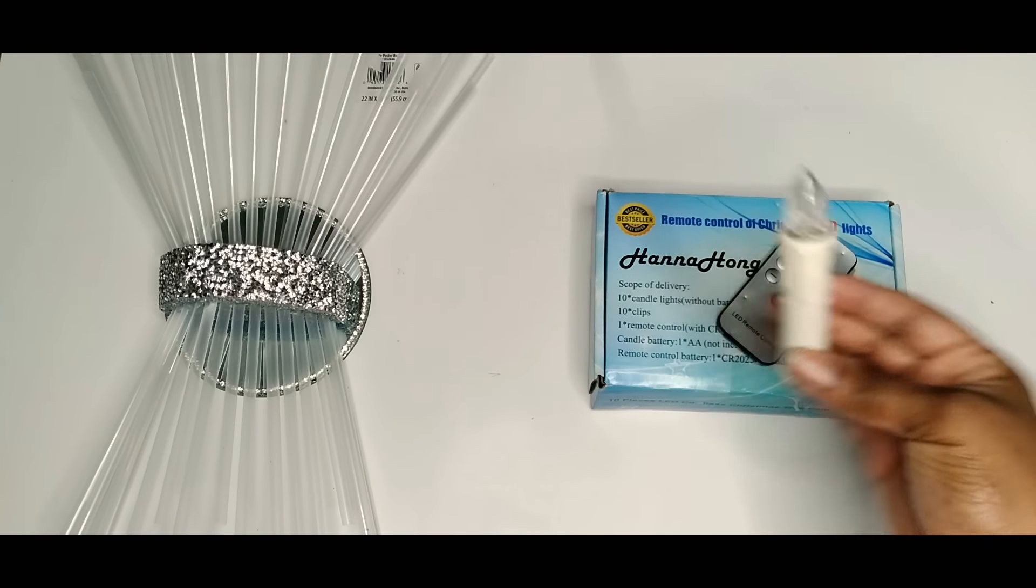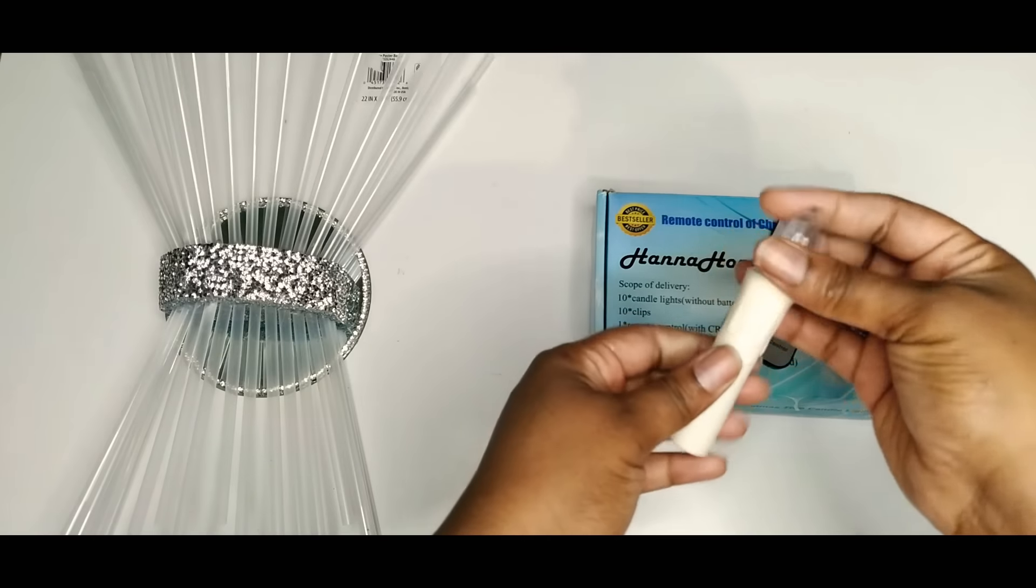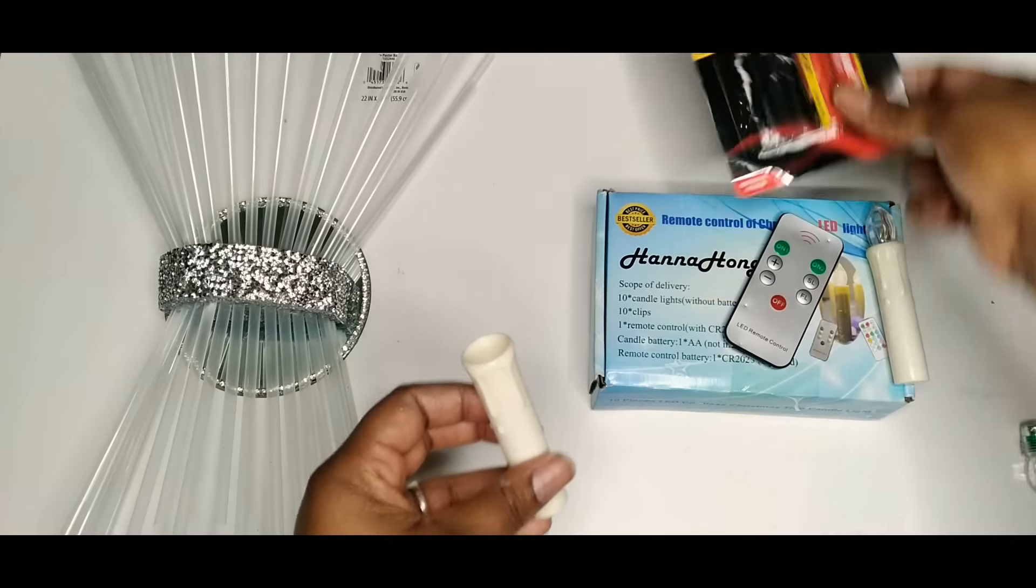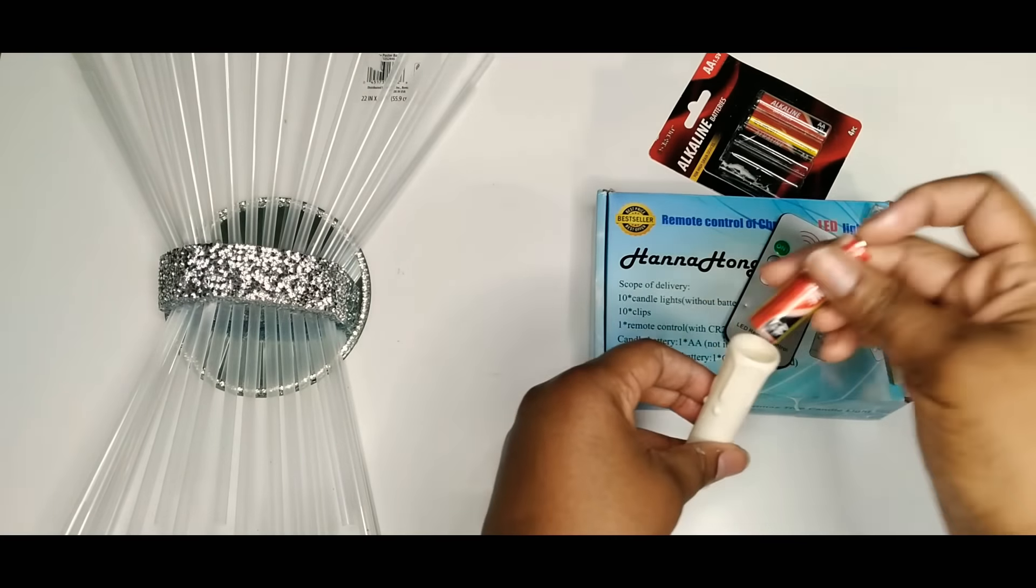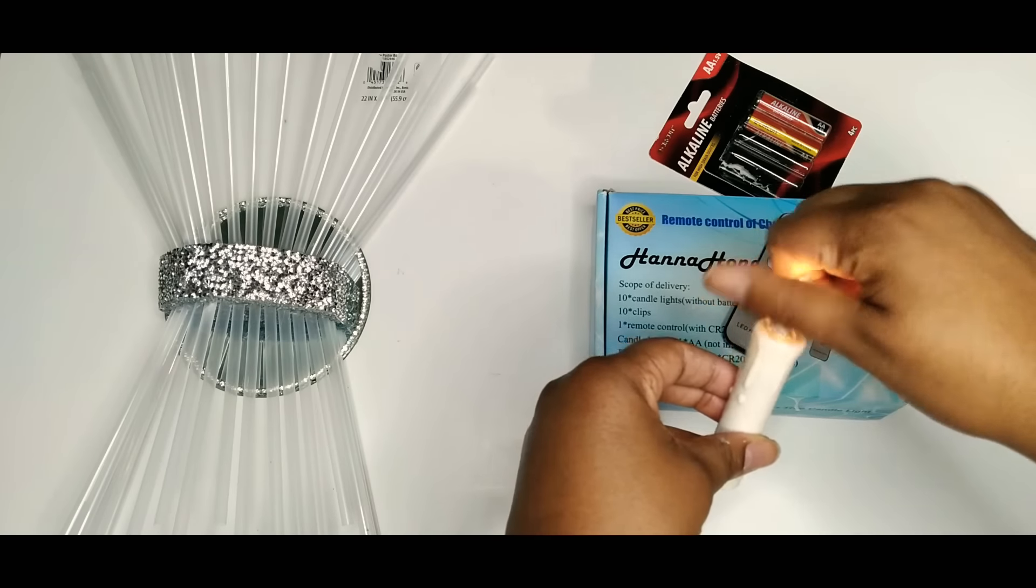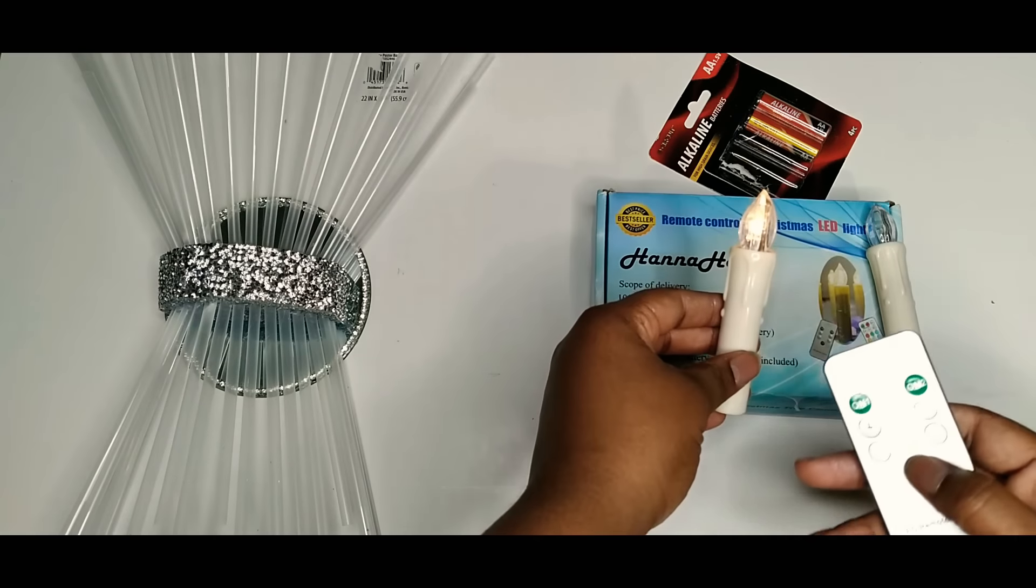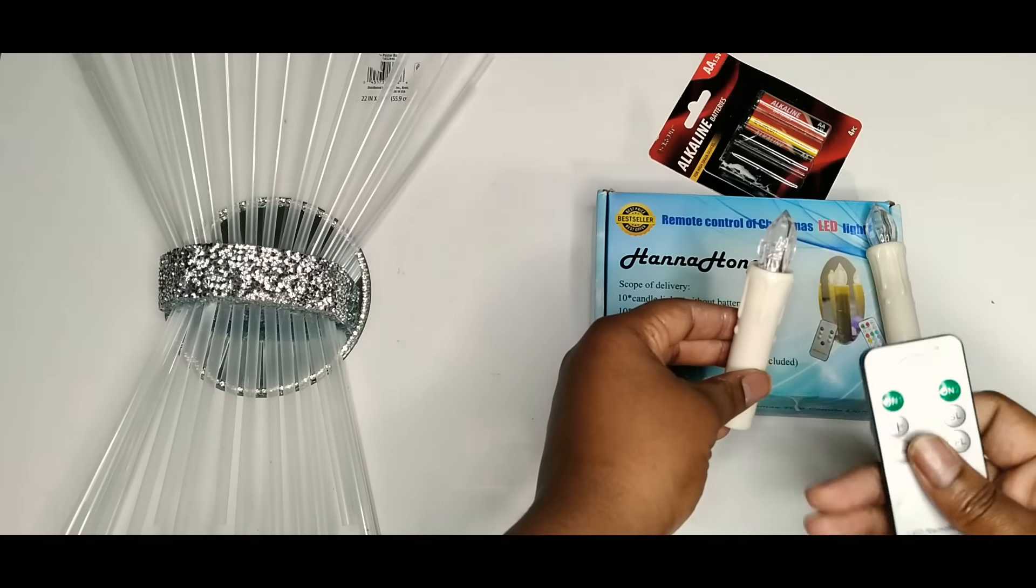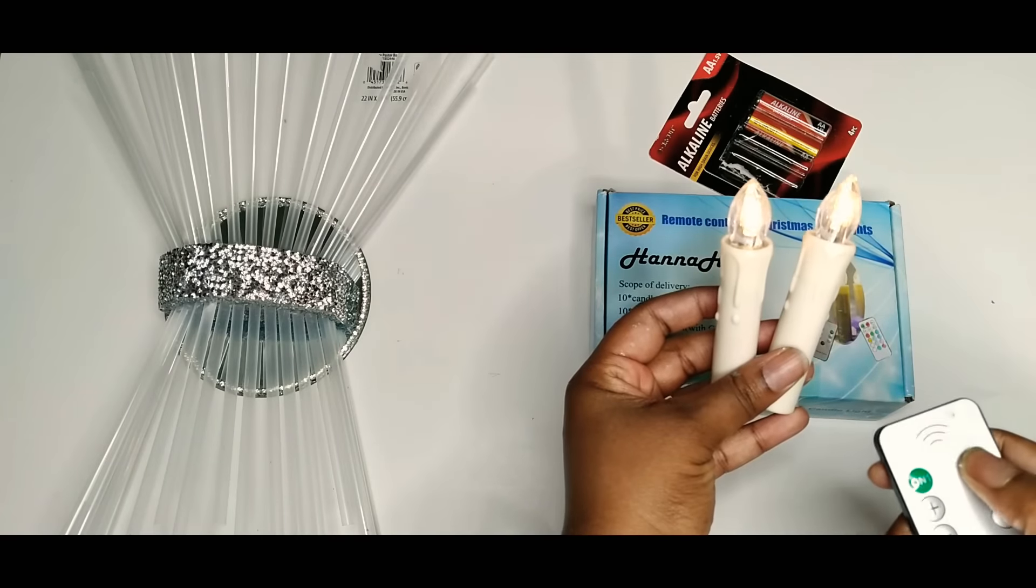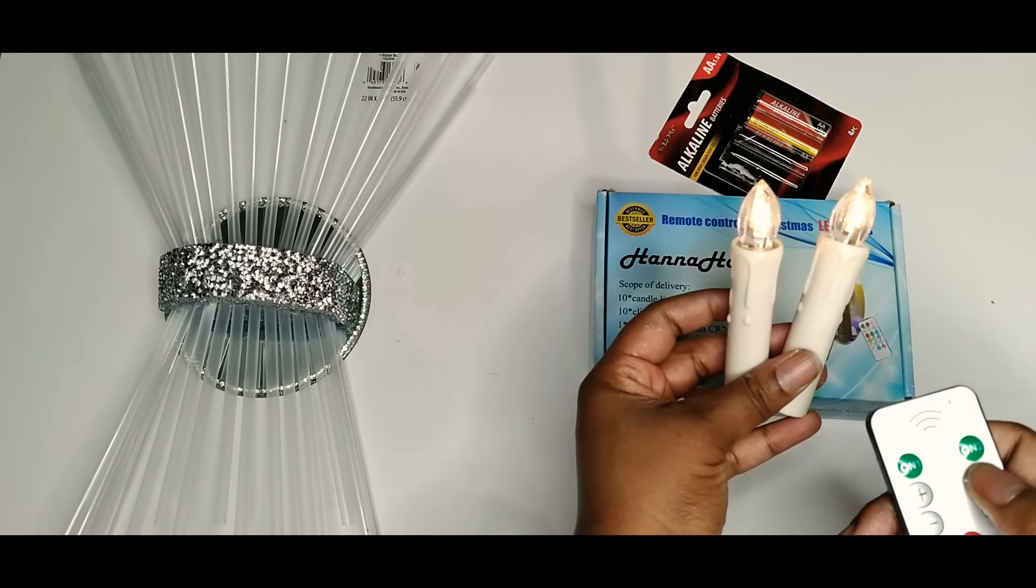And now I'm taking these Hannah Hong 10 piece LED coreless Christmas tree candlelight. In this set you will get 10 candle clips, one remote with the battery and 10 candles. They are 4 inches tall and they need one AA battery each which are not included. I'm just unscrewing mine and placing one Dollar Tree alkaline AA battery inside. And here I'm just showing you how easy the setup is. Once you screw your light bulb back on, the candle will automatically turn on. If you just take your remote and press off, you can control the candles. As you see, they both are controlled by one remote.